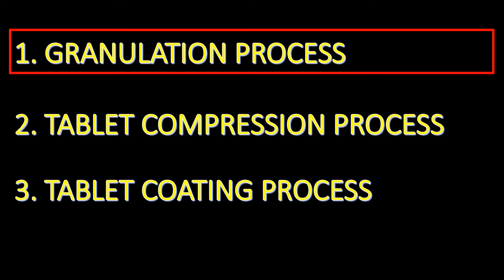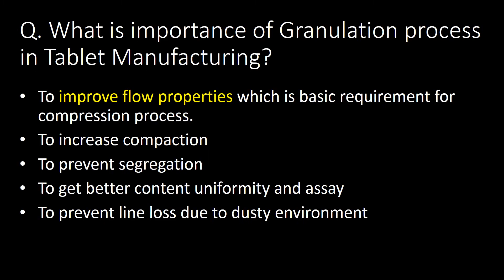This is the first video of the series. We will start with a very basic question: what is the importance of granulation process in tablet manufacturing? Granulation process is used to improve flow properties, which is a basic requirement for the compression process. It is also used to increase compaction, prevent segregation, get better control over uniformity and assay, and prevent line loss due to a dusty environment.